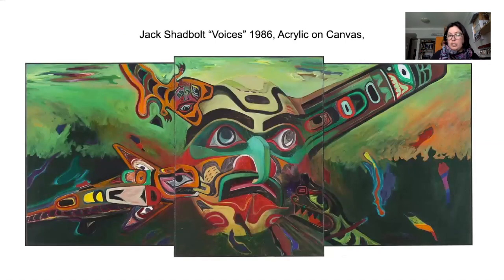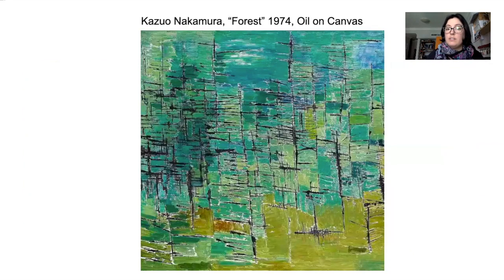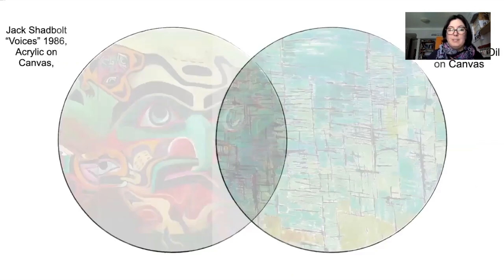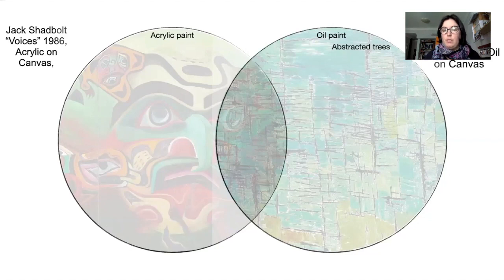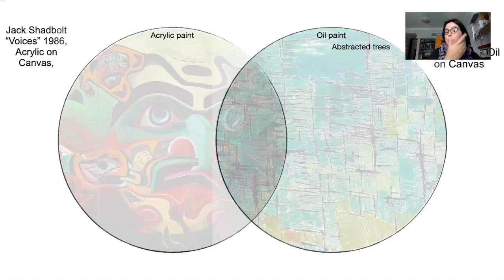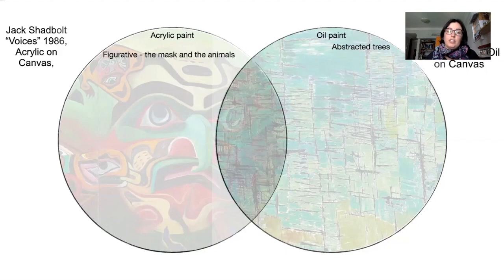Next we're going to look at Jack Shadbolt's 'Voices' from 1986 and Kazuya Nakamura's 'Forest' from 1974. Both these pieces were created roughly a decade apart. Nakamura's piece was made with oil paint whereas Shadbolt's was done with acrylic painting. Nakamura's piece uses abstracted lines to create the impression of trees — hence the title 'Forest' — and we imagine we're looking at pine trees; the forest may look almost bare but there is a lot going on. Shadbolt's piece is figurative — there is a figure in there; the mask may not be a person but evokes the idea of a person, and the animals and creatures are similarly figurative.